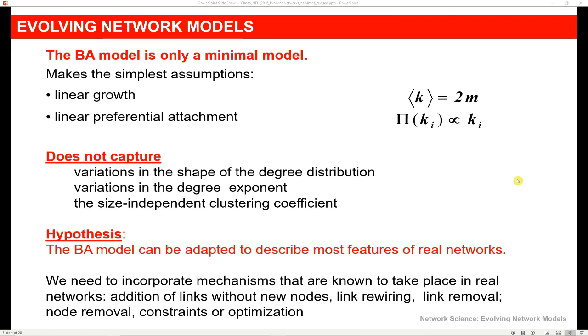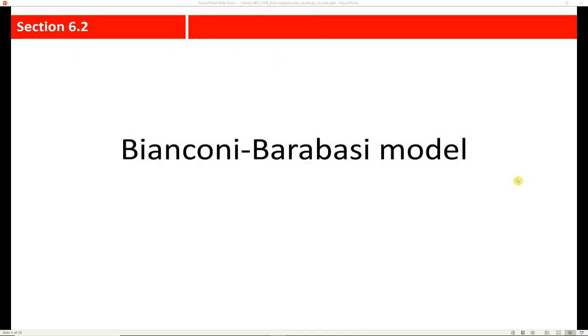The BA model is minimal. It makes very basic, simplest assumptions of linear growth and linear preferential attachment. It doesn't capture variations in the shape of the degree distribution or variations in the degree exponent. Nor does it capture the size-independent clustering coefficient. However, we don't want to throw the model completely away - it can be adapted to describe most features of real networks. To get an even better picture, we have to incorporate things that take place in real networks, like adding links without adding new nodes, if links get rewired or removed, if nodes get removed, or if there are certain constraints on the network and what kind of optimization can take place.